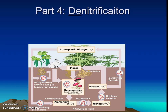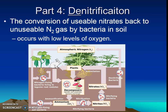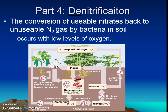Part five: sometimes those usable forms will accidentally convert back into unusable forms by certain bacteria. The denitrifying bacteria are the ones that take usable nitrogen and return it back to the unusable N2 form. And that's the nitrogen cycle — super complicated, but you made it through all three major biochemical cycles!